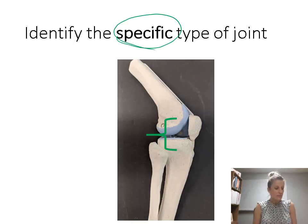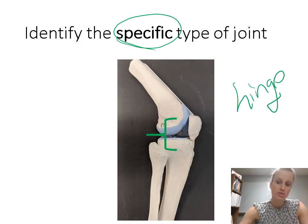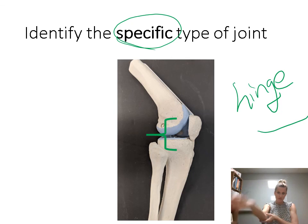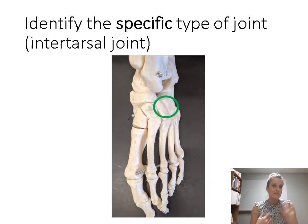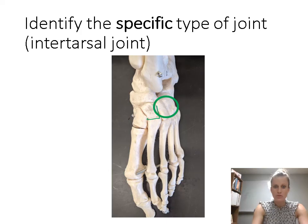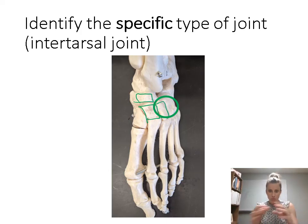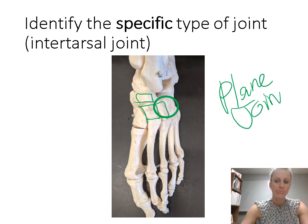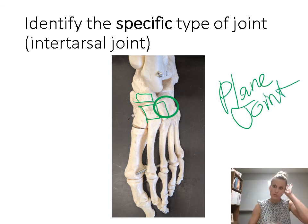Identify the specific type of joint. This is showing the knee joint — the knee is a hinge joint. That's the same as the elbow: the joint between the humerus and the ulna is also a hinge joint. It allows movement along one plane — flexion and extension — so it's a hinge joint. This is an intertarsal joint, a joint between the tarsal bones. The tarsal bones are relatively square, and the joint between them has flat surfaces that glide along each other, so this is a plane joint. The carpal bones are the same — also a plane joint.